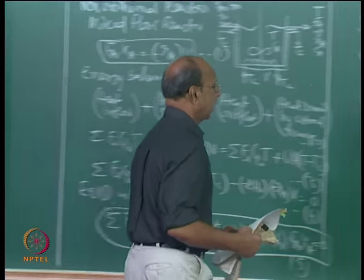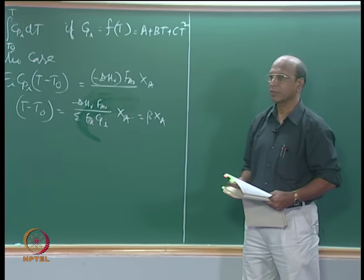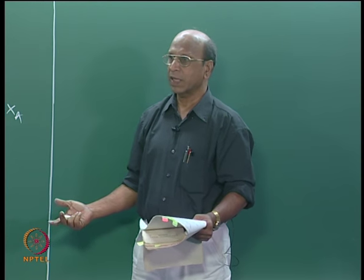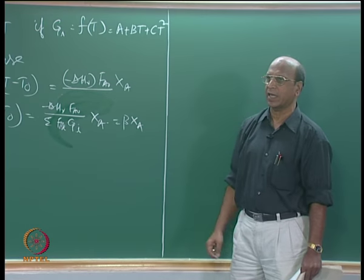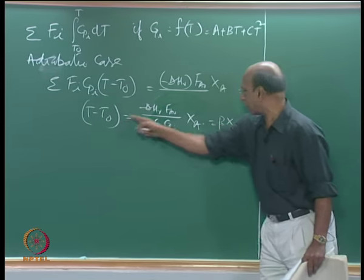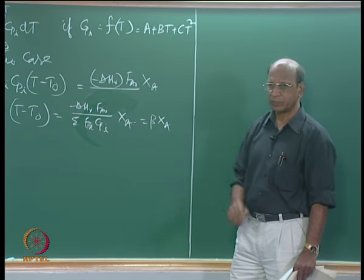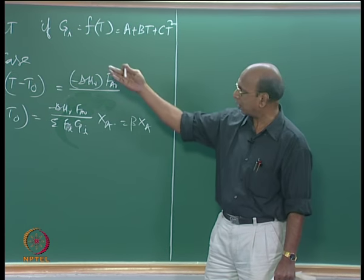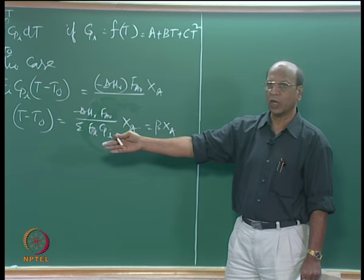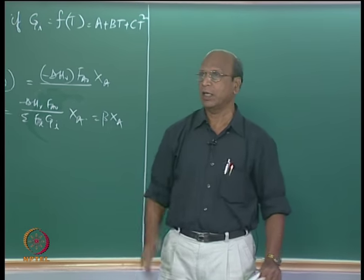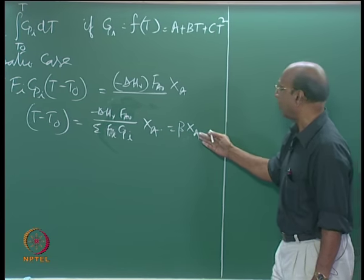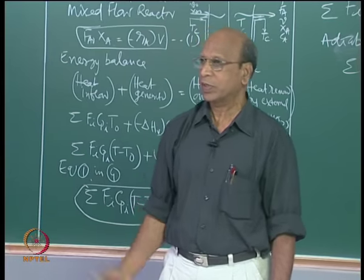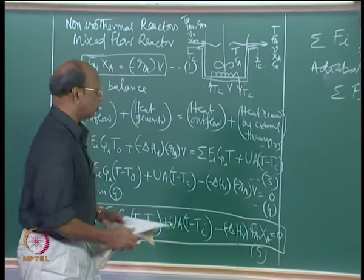This is much easier to solve. For the adiabatic case, knowing X_a you directly get T, since T minus T0 equals beta times X_a is unique. Then you go to minus r_a as a function of T and X_a, and calculate the volume. This is equation 6, 7, and 8.